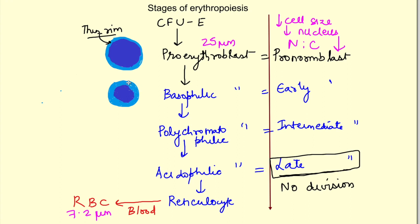Intermediate normoblast or polychromatophilic erythroblast - the name says polychromatophilic, so it is getting stained with multiple colours. In this stage hemoglobin appears in the cytoplasm and that is why it stains with both blue and red stains. So hemoglobin appears in intermediate normoblast. The size of the nucleus and cell have decreased further.